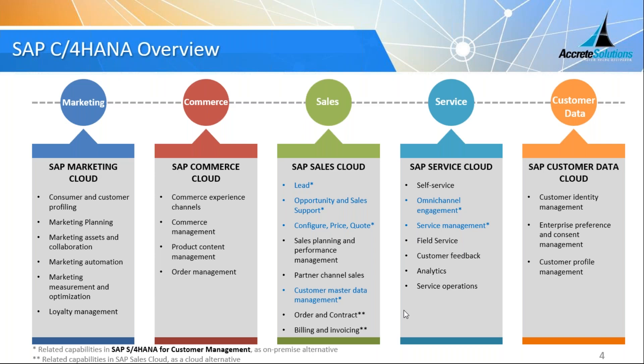SAP Service Cloud comprises field service (the Coresystems acquisition), self-service, customer feedbacks, service operations, and customer service features like service ticketing and CTI integration. Omni-channel engagement (interaction center) and service management from SAP CRM also reside in SAP S4HANA for customer management in addition to being in SAP Service Cloud. SAP Customer Data Cloud provides customer identity management and consent management. This gives a brief overview of SAP C4HANA and how it relates to SAP CRM offerings.